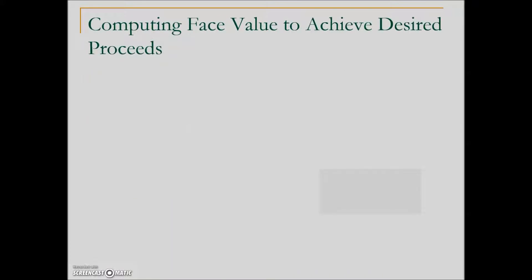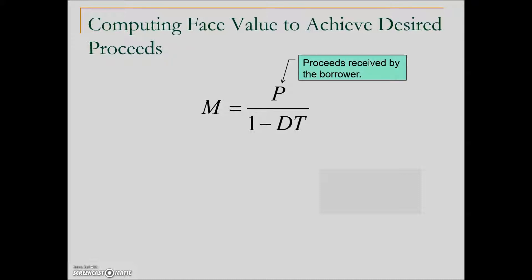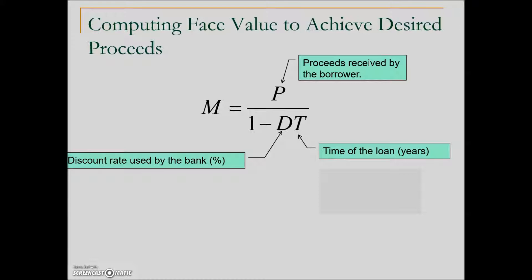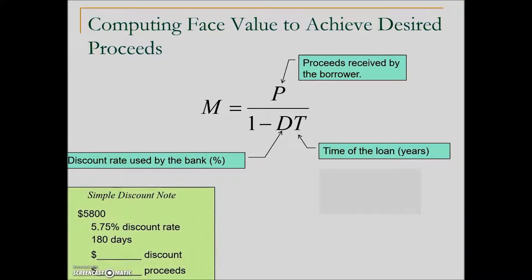So how do we compute the face value to get the desired amount of proceeds that we need? We're going to use the following formula where P is the proceeds received by the borrower — this is where we would put the amount that we actually want. D is our bank discount rate and T is the time of the loan in years.